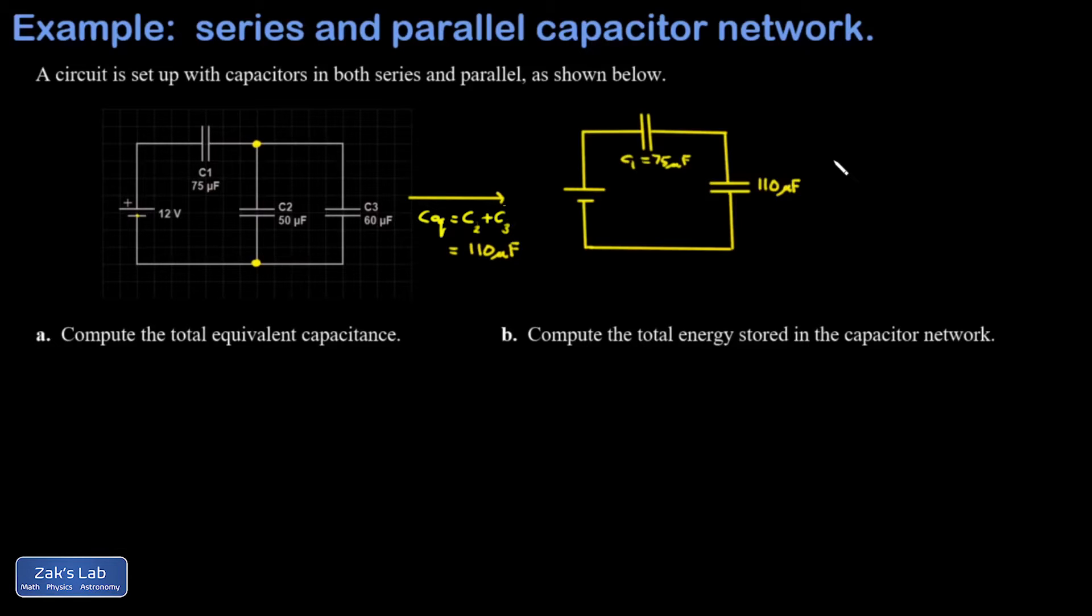At my next step I see that I clearly have a series relationship between C1 and the first equivalent capacitance of 110 microfarads. I want to get an equivalent for this, and at that point I'll be down to one single equivalent capacitance and my circuit is simplified.